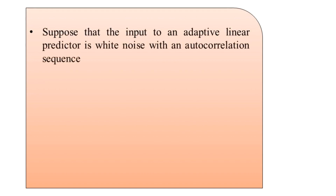The problem statement starts as follows: suppose that the input to an adaptive linear predictor is white noise with an autocorrelation sequence denoted as R_x(k), which is equal to sigma_x squared multiplied by delta(k). This is the given information.